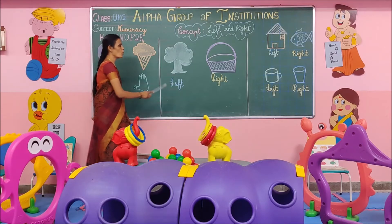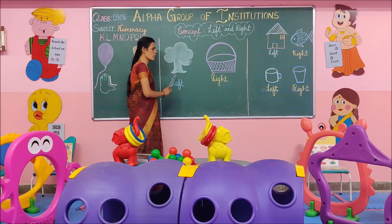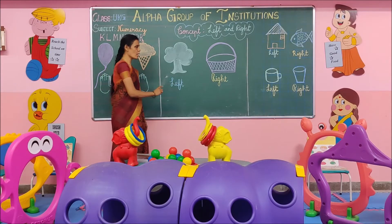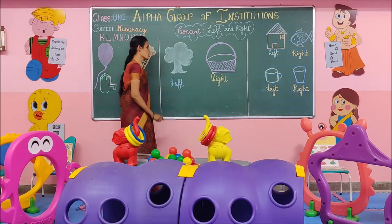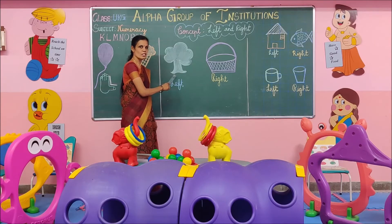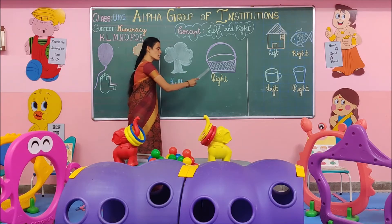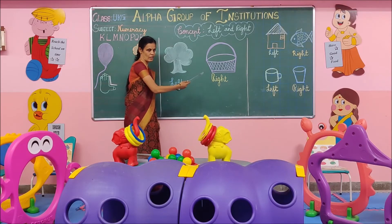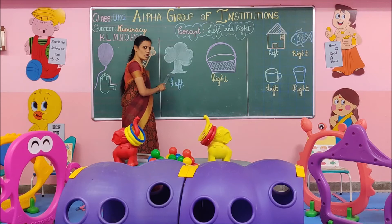Now, what are these? A tree and a basket. Where is the tree? It is on the left hand side. Where is the basket? It is on the right hand side.